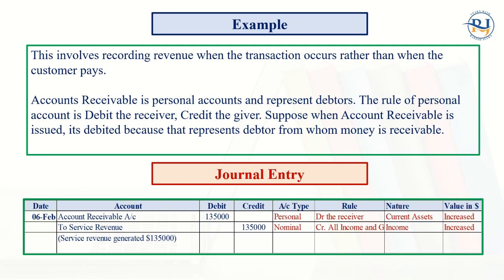The rule of personal account is: debit the receiver and credit the giver. When accounts receivable is issued, it is debited because it represents debtors from whom money is receivable. The journal entry would be: Accounts Receivable Account debit to Service Revenue. In this case, the services are provided by the company and the money is due but not received — that amount is $135,000.